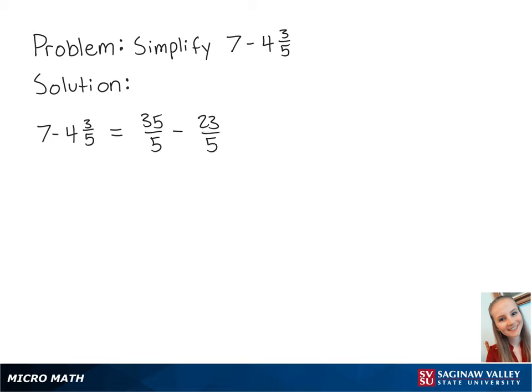Now we can subtract 23 from 35, which is 12. So we now have 12 fifths.